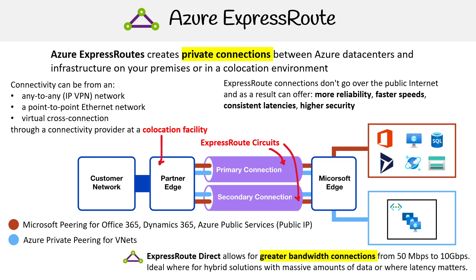There is also ExpressRoute Direct, which is ExpressRoute with an additional benefit of greater bandwidth connections — from 50 megabytes per second up to 10 gigabytes per second. This is ideal if you have hybrid solutions where you're moving massive amounts of data, or where latency matters because you want these cloud services to feel like they're right there with your on-premise environment.